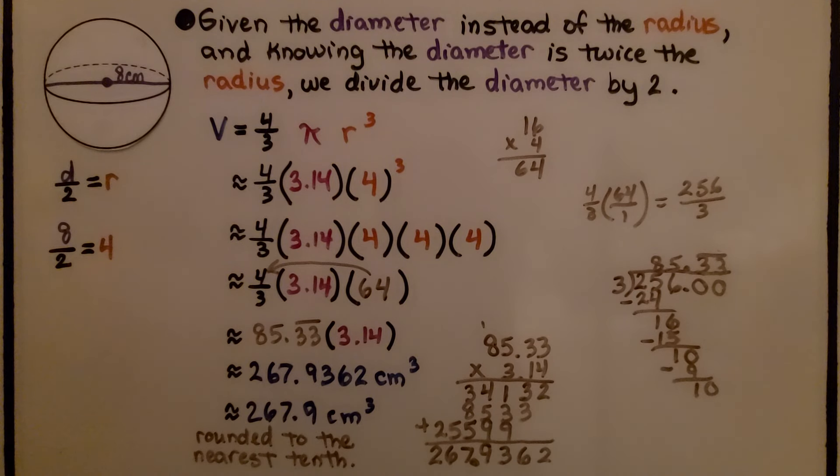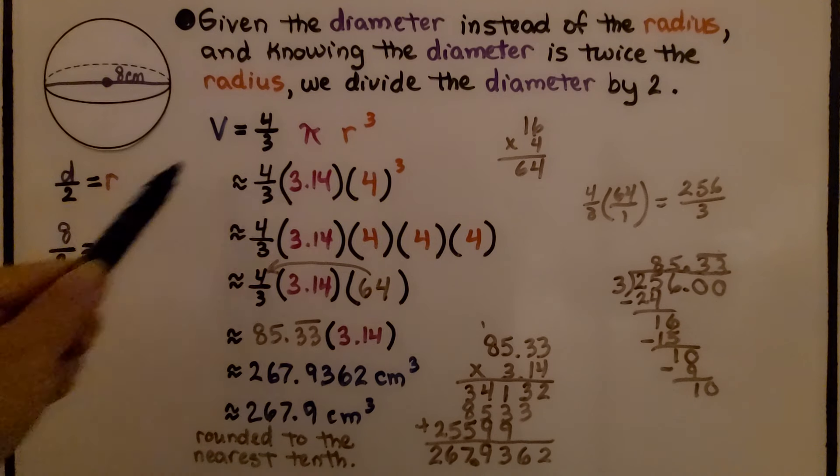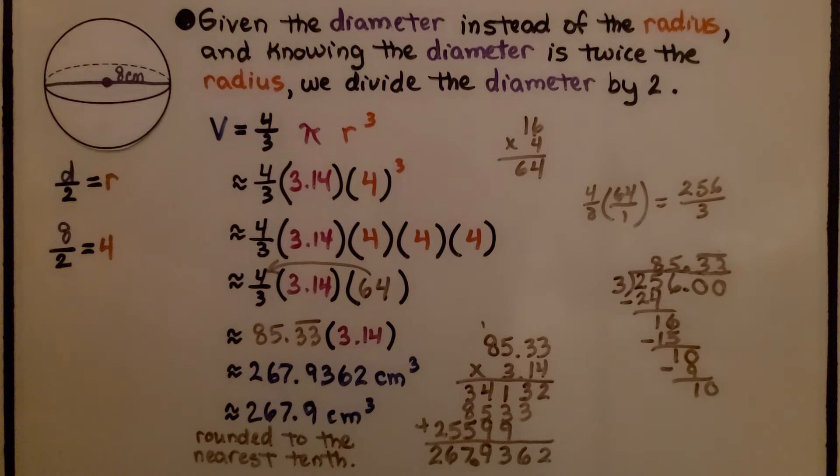Given the diameter instead of the radius, and knowing the diameter is twice the radius, one part of this would be the radius, all the way across is the diameter. We can just divide the diameter by 2. If we see that it's 8, the diameter divided by 2 is the radius. That means the radius is 4.